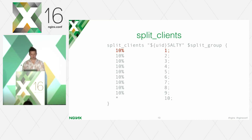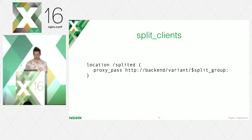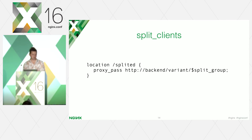The top ten percent of our audience will fall into group one, the second ten percent falls into group two, and so on. The result is a variable with a group that can be used in the nginx configuration — for instance in a proxy_pass directive. This was the most simple configuration to split the entire audience into N groups by UID.